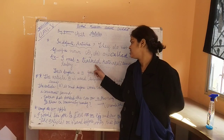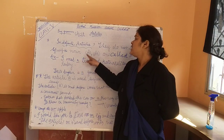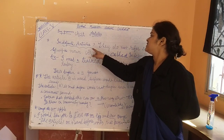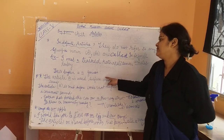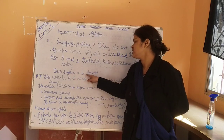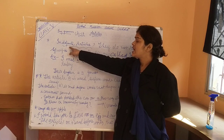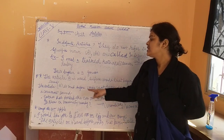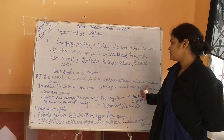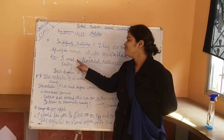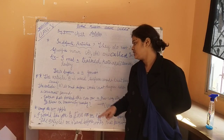For example: I made a friend Kathakali dancer today. Here, A is used as an indefinite article. The article A is used before words that begin with a consonant sound.